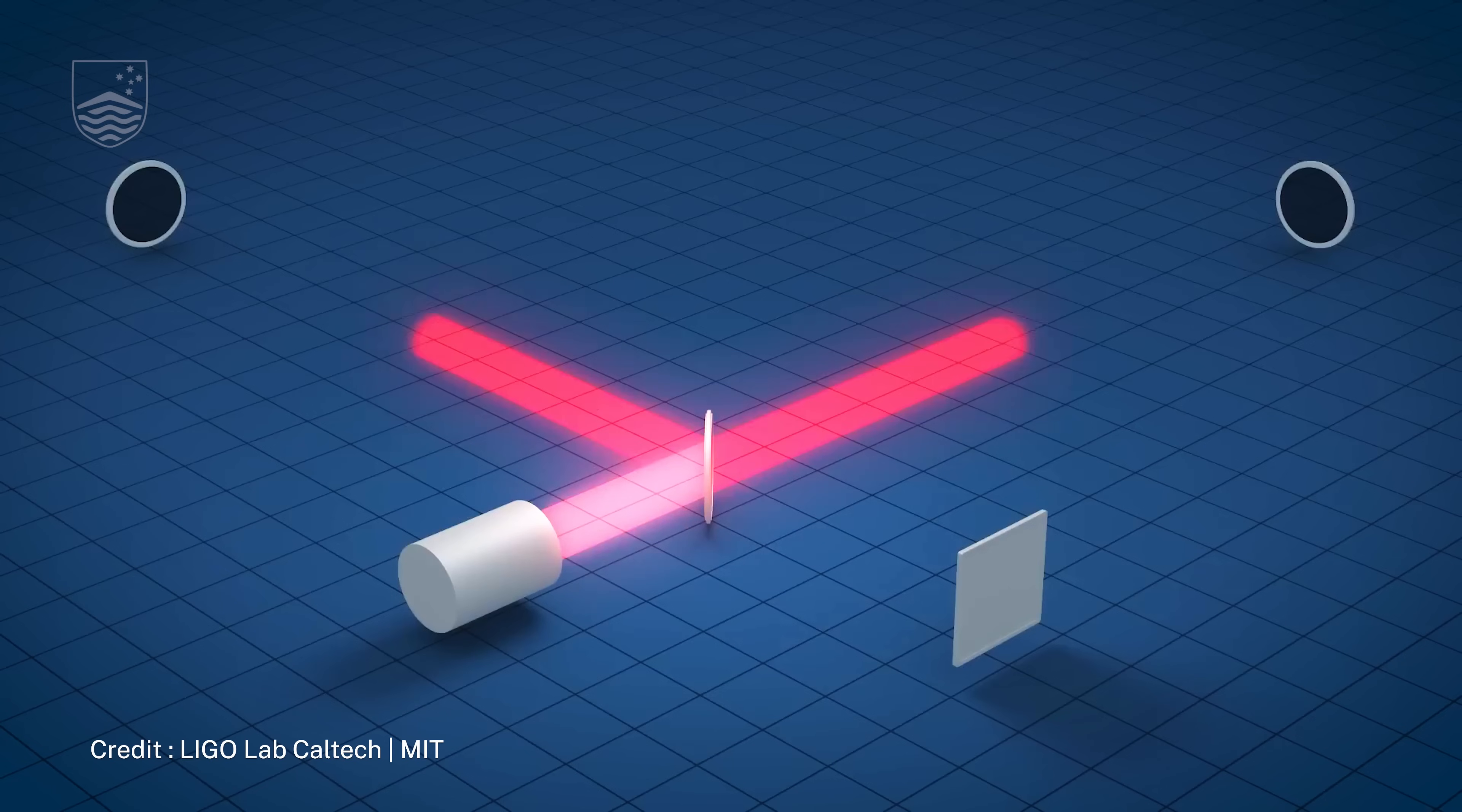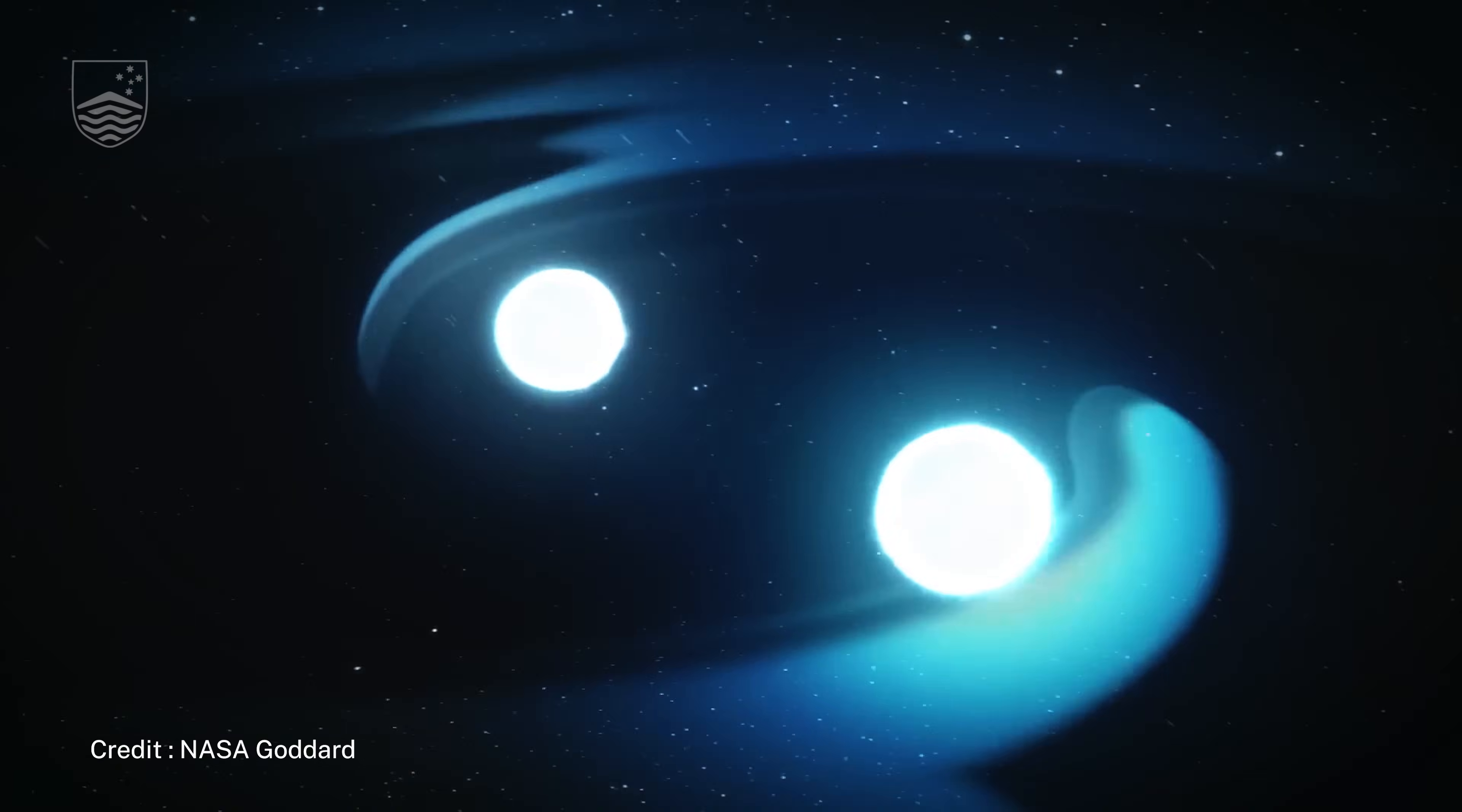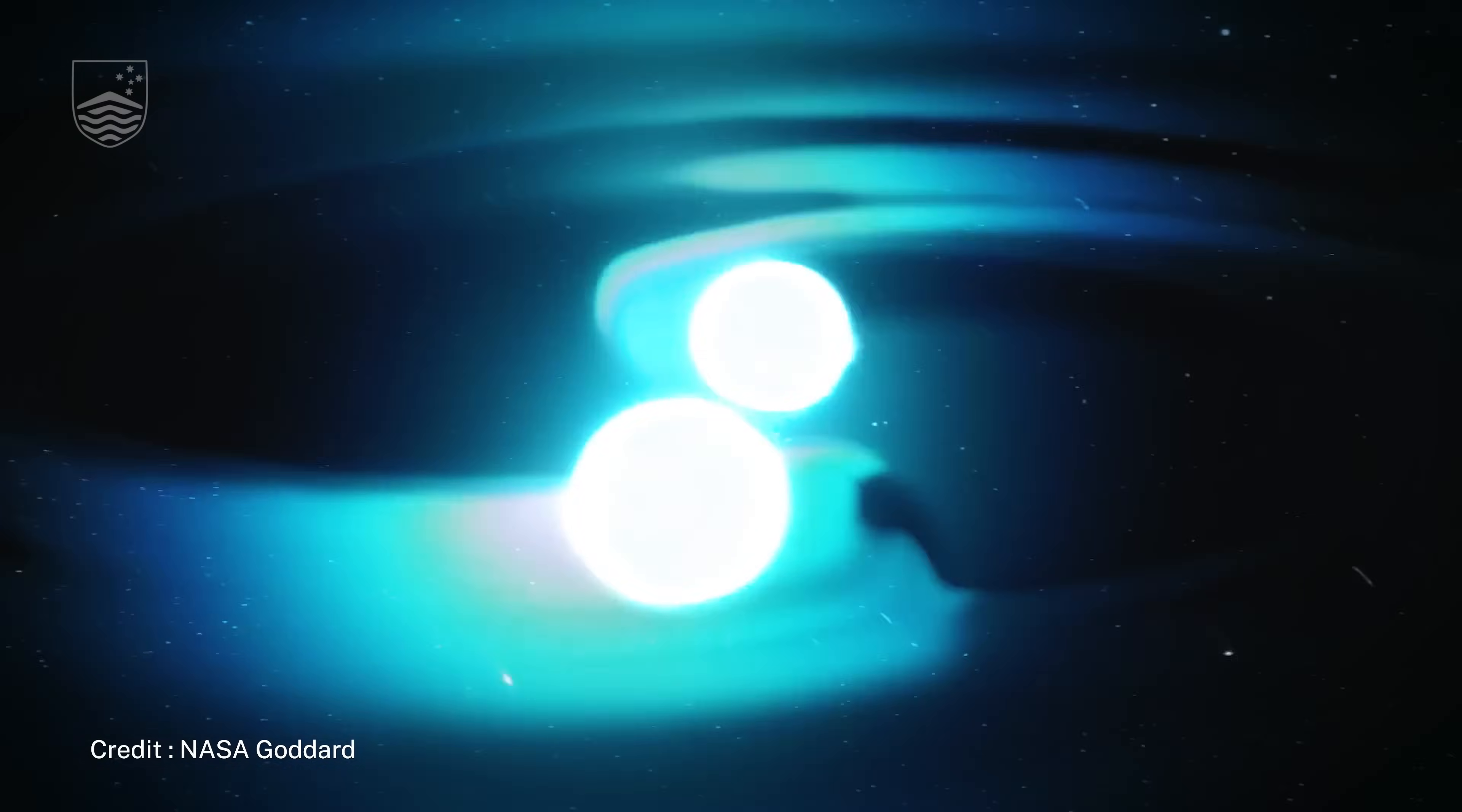What a gravitational wave does as ripples is when it passes through the Earth, it changes the separation between objects. So we can use laser beams to measure that change in separation.